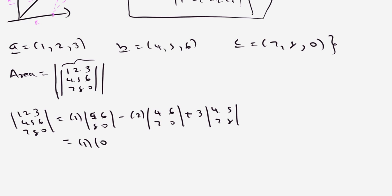So 1 times (0 minus 48), this will be 0 minus 42, this will be 32 minus 35. So this will produce minus 48 plus 84 plus minus 9.